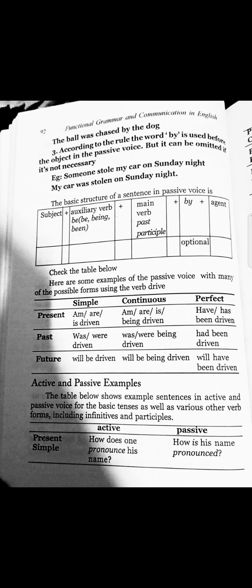These auxiliary verbs are very important. Future perfect: will have been driven. The table below shows active and passive examples, including infinitives and participles.